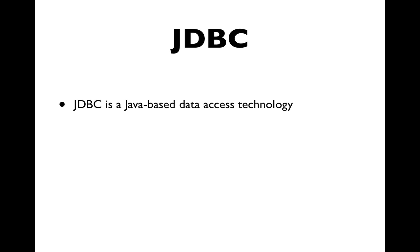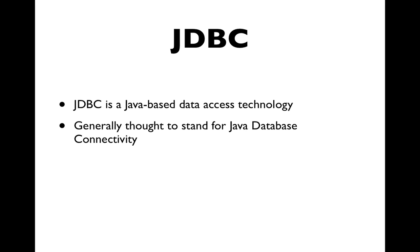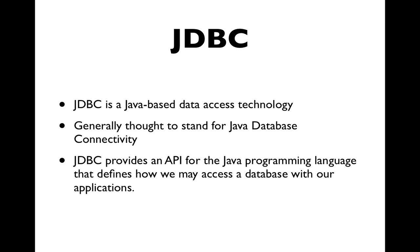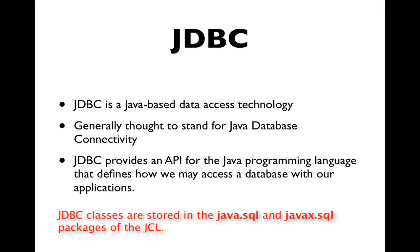In Java, we have the JDBC — Java Database Connectivity — which is a Java-based data access technology. The JDBC provides an application programming interface, or API, for the Java programming language that defines how we may access a database with our applications. In practical terms, there are a number of classes included in the Java Class Library which help us connect to a database, send commands, and work with the results. Collectively, those make up the JDBC.